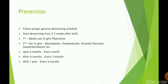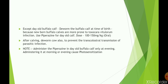The first choice anthelmintic is piperazine. Second choices include albendazole, fenbendazole, pyrantel pamoate, and oxfenbendazole. The deworming schedule is: up to 6 months — deworm every month; after 6 months — every 3 months; after 1 year — every 6 months. For buffalo calves, deworming should be done at the time of birth since newborn buffalo calves are more prone to Toxocara vitulorum infection.